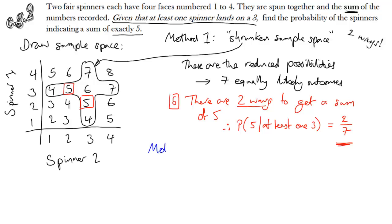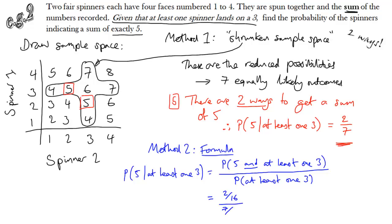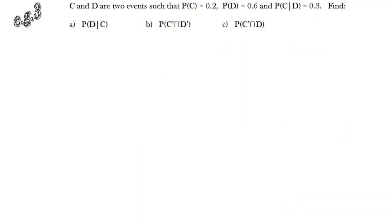The other method is to use the conditional probability formula. The probability of getting a sum of five, given that at least one three has occurred, equals the probability of getting a five and at least one three — that's the intersection — divided by the probability of getting at least one three. The probability of getting a five and at least one three is two out of sixteen, and the probability of at least one three is seven out of sixteen. That simplifies to two sevenths, just like before.